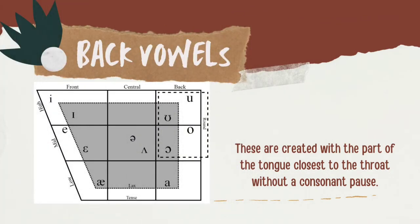The last category is back vowels. Back vowels are created with the part of the tongue closest to the throat without a consonant pulse. There are the sounds: /uː/, /ʊ/, /ɒ/, /ɔː/, and /ɑː/. Let's practice together.